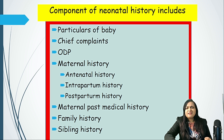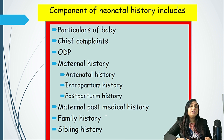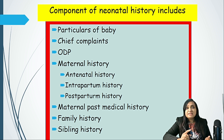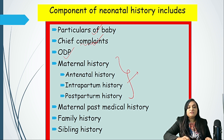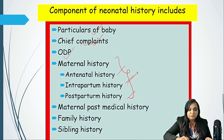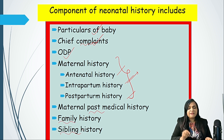What are the components of newborn history? Medical students are often confused during exams, particularly in a short case of a newborn. The components are: particulars of the baby, chief complaint with onset, duration, and progress; then the integral part — maternal history — divided into antenatal, intranatal, and postnatal history; medical and past history of the mother; family history; sibling history; and immunization history.